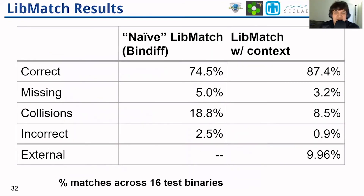First, let's examine the performance of libmatch. As you can see from this table, the context features used by libmatch not only allow us to obtain a higher rate of correct matches and a lower rate of collisions, but they also allow for up to 10% more names than we would otherwise have using content matching alone.